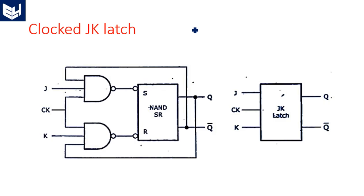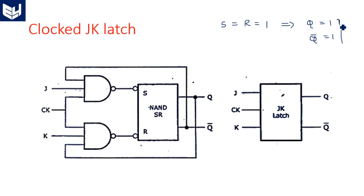What is the drawback in the SR latch? When both S and R are zeros, the previous state is the output. When both S and R are ones, the output is an indeterminate state — Q equals 1 and Q bar is also equal to 1. This is a false statement. When Q is equal to 1, Q bar should be 0, and when Q is equal to 0, Q bar should be 1. But the SR latch gives both ones or both zeros, which is the problem.